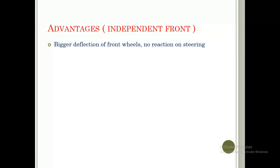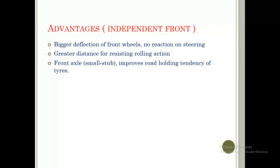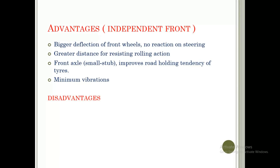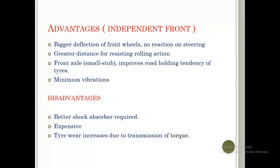Advantages of the independent front suspension system include: bigger deflection of the front wheel with no reaction on steering, greater resistance to rolling action, small front stub axle improving load-holding tendency of tires, and minimum vibrations. Disadvantages include: better shock absorbers are required, it is an expensive suspension system as the body is made from casting and later forging, and tire wear increases due to transmission forces.